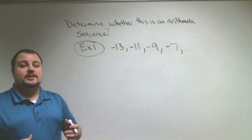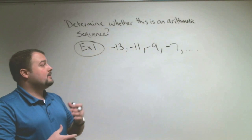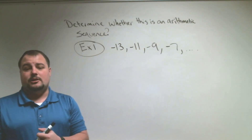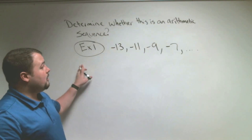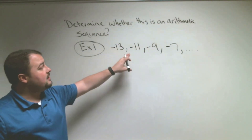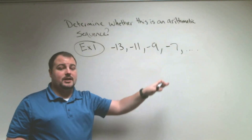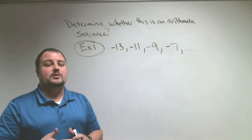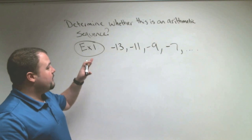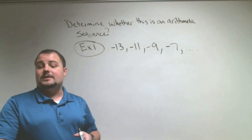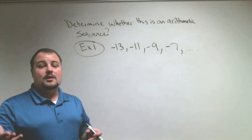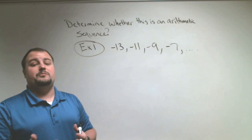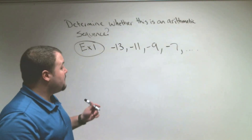One of the first examples we're going to do is examine whether or not we have an arithmetic sequence. In example 1, we have the numbers negative 13, negative 11, negative 9, negative 7. We have to say: does this have a pattern? Because that's what sequences do — they have patterns. And if it does, what is the pattern?